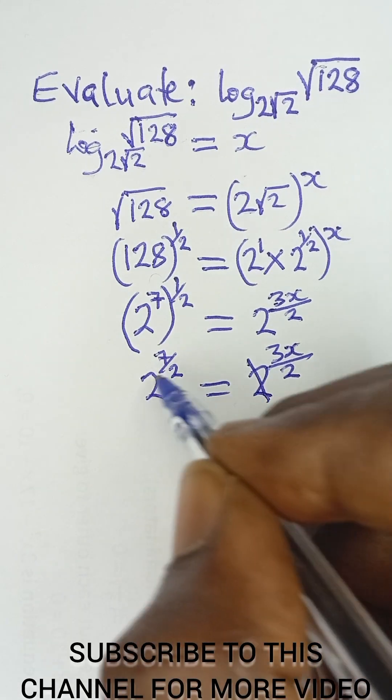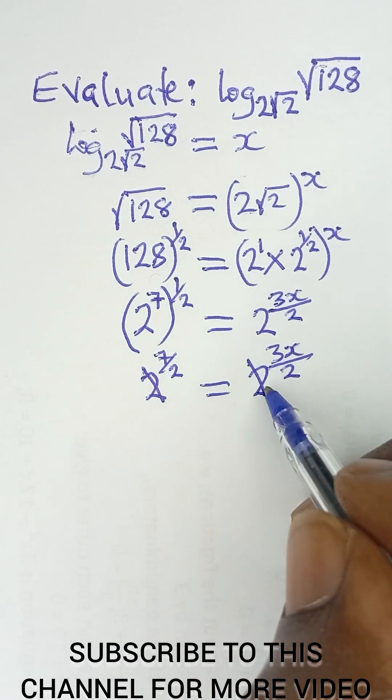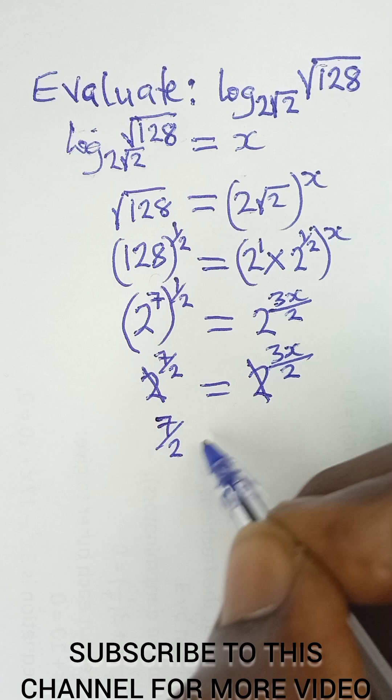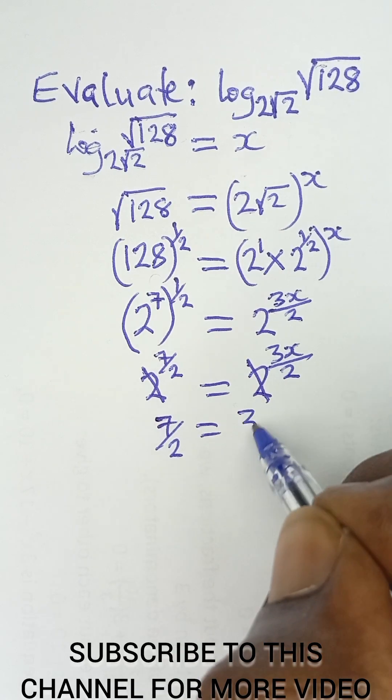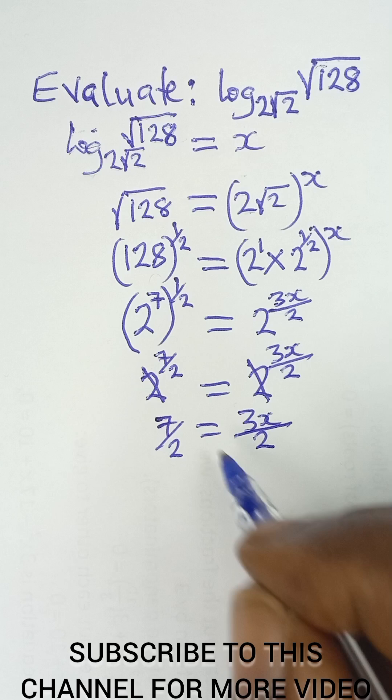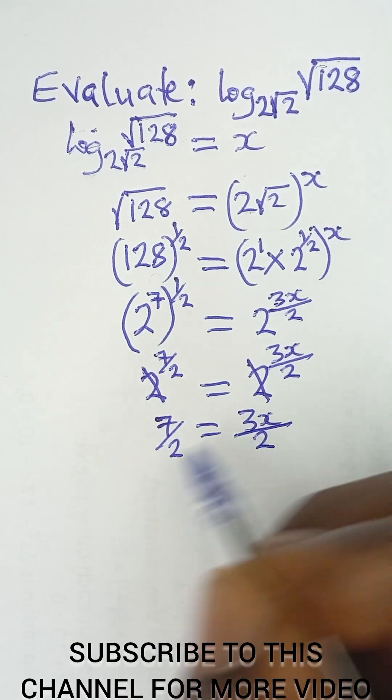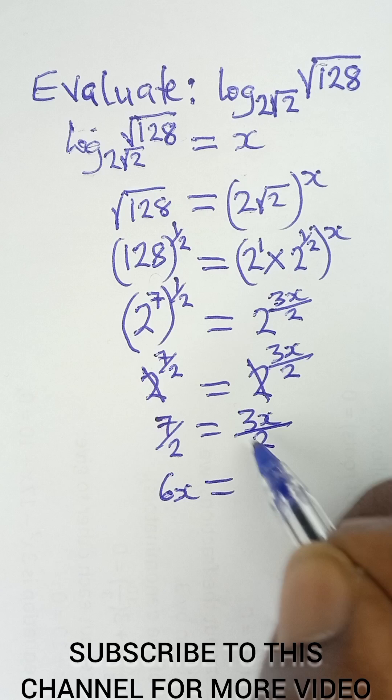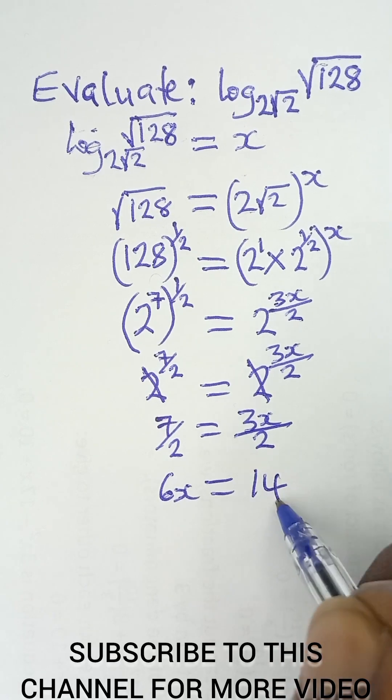Now that the bases are equal, we equate the powers. So 7 over 2 equals 3x over 2. Cross multiplying gives 6x equals 14.